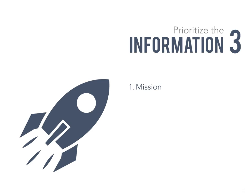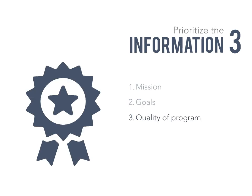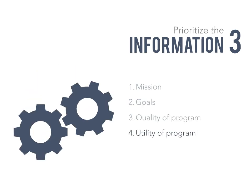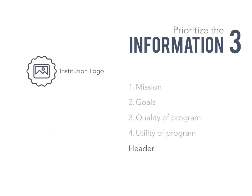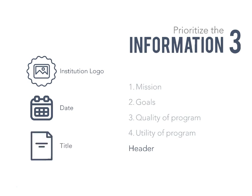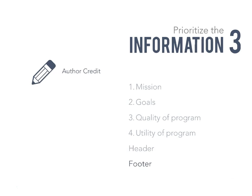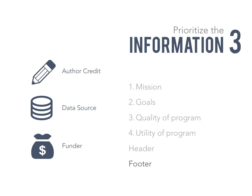Examples of what you might want to include on a one-page report based on your audience could be the project's mission — if your audience is the greater community, they may not have great familiarity with your project, so providing that mission may help them understand the data you're communicating. You could also include your project goals, the quality or utility of the program. For the header information, you always want to include the institution's logo, the date the report was created, and the title. For the footer, we encourage you to think about adding the author credit, data source, and any funding information that needs to be included.